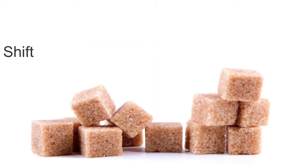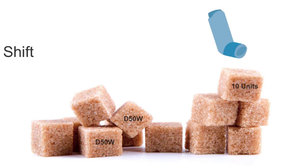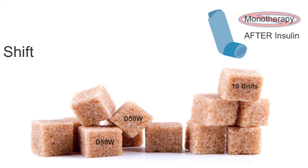To shift potassium, there are two mechanisms. First, give 2 amps of D50W and 10 units of insulin R, monitor glucose every 30 minutes, and repeat the potassium and ECG at 1 hour. Repeat until the potassium is less than 6. The second therapy is salbutamol, which works synergistically with insulin — give 8 puffs via an Aerochamber or 20 mg nebs. Salbutamol can cause a transient rise in potassium, so always give it after insulin and never as monotherapy. Regarding bicarb, experts do not recommend routine use; it may play a small role in a subset of patients with a non-anion gap metabolic acidosis, such as RTA.